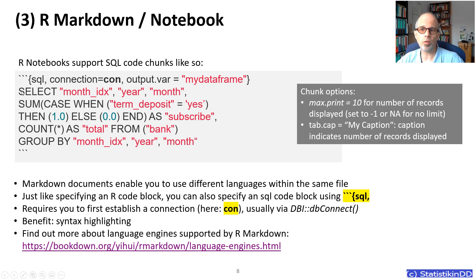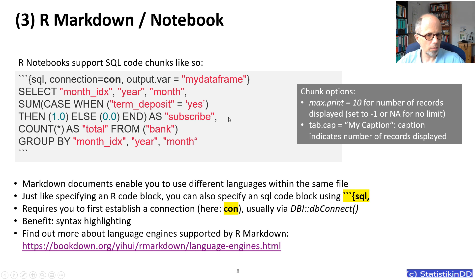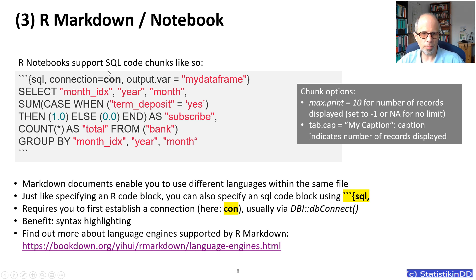The advantage with the R Markdown approach is that you get syntax highlighting for the SQL code, which you don't get with the DBI approach. You can specify chunk options in R Markdown as shown in the dark gray box. You also need a database connection that must be specified first — in the chunk header you just say connection equals con, which has to be defined before that code block. So that was the third approach.